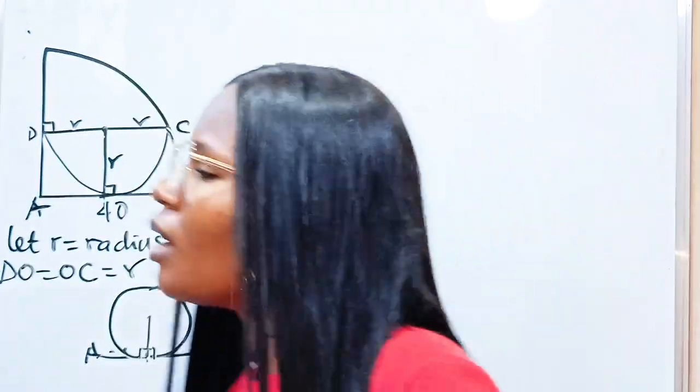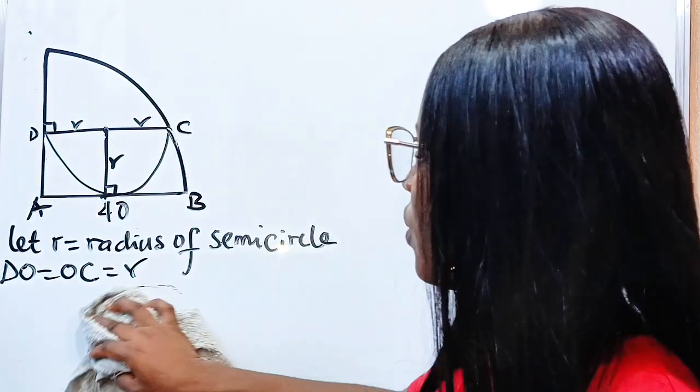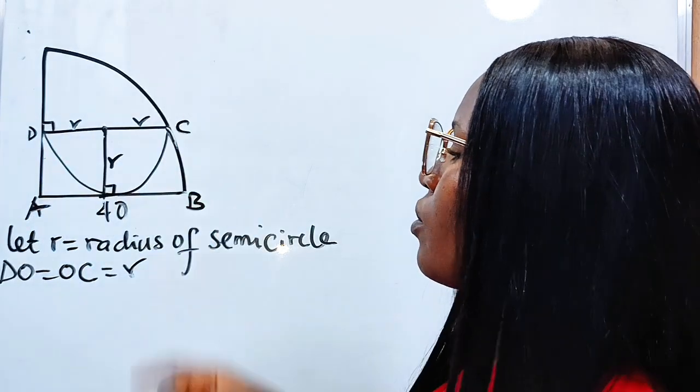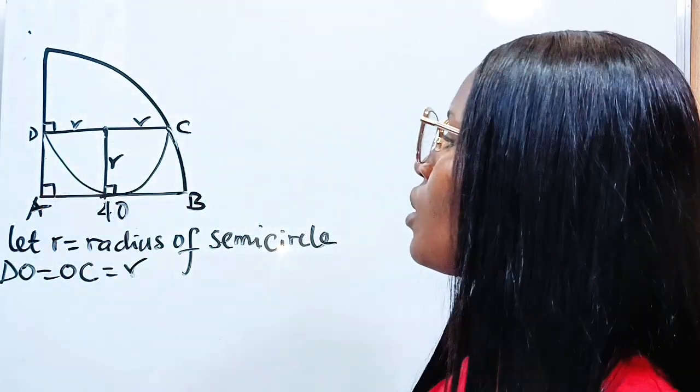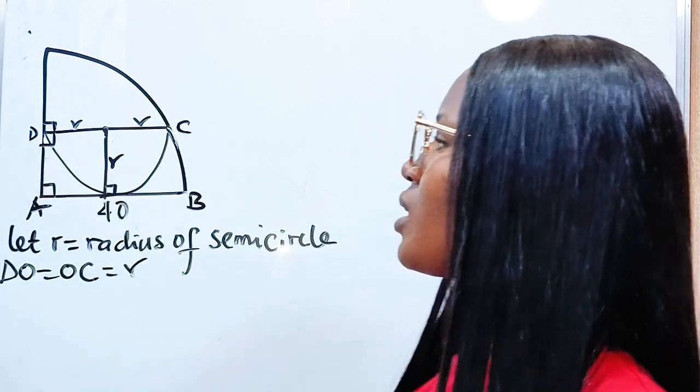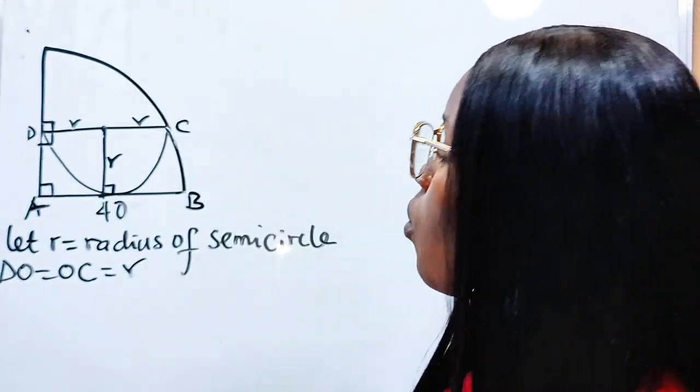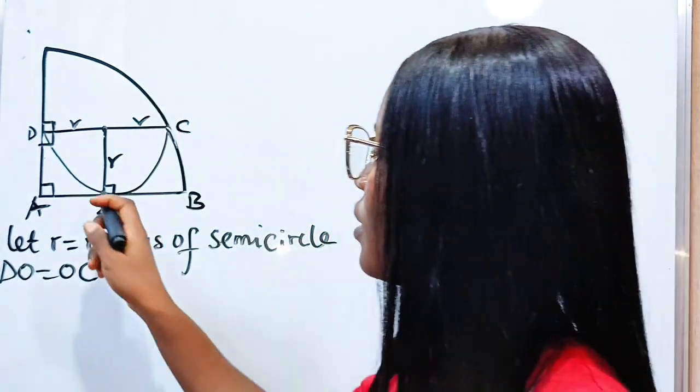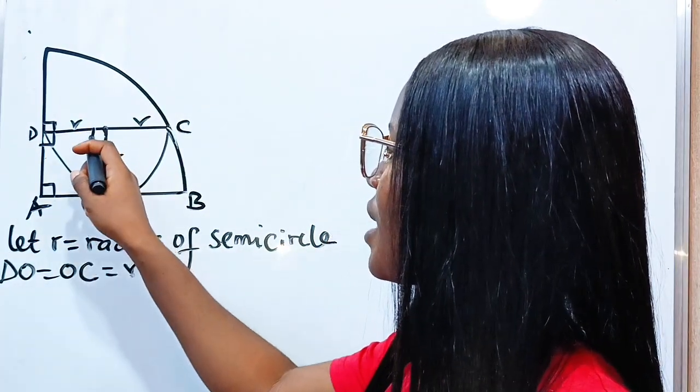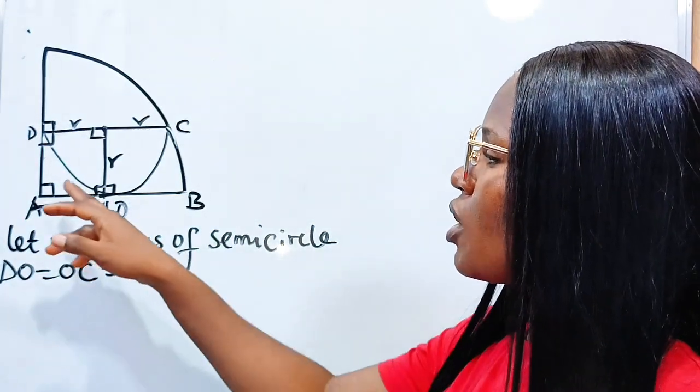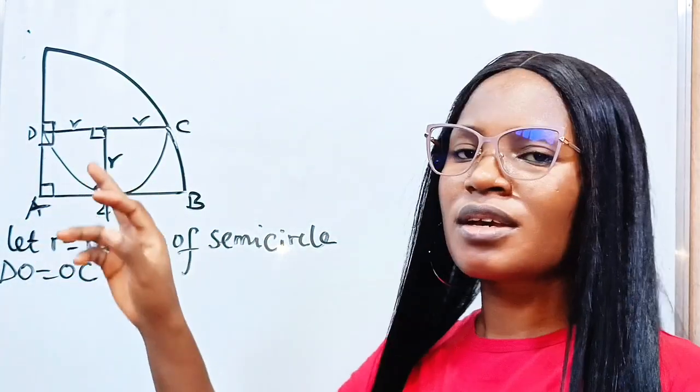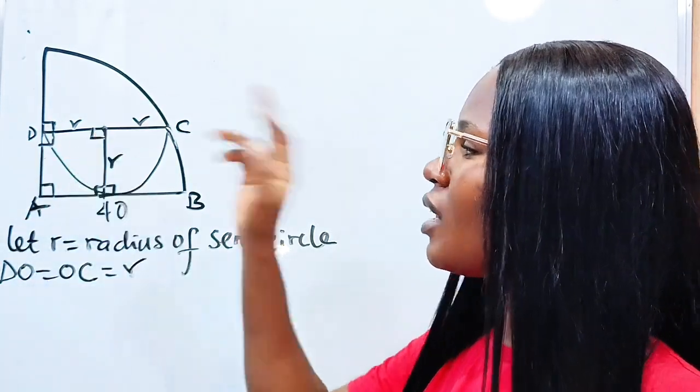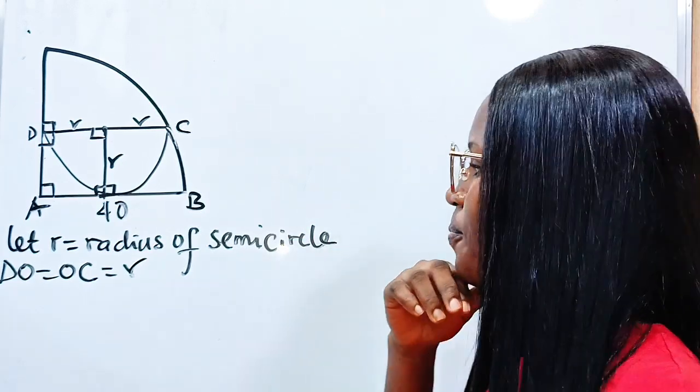This is a quadrant, meaning this is the center of this circle, so definitely this is 90 as well. Angle in a straight line is 180, so if this is 90, the remaining portion should be 90. This side is 90, so the remaining side should be 90 because the sum of angles in a quadrant is 360.